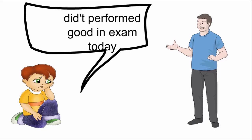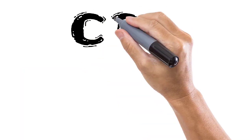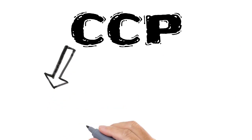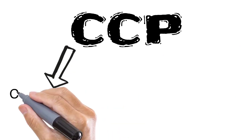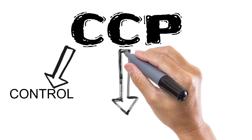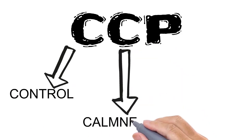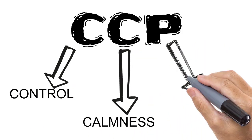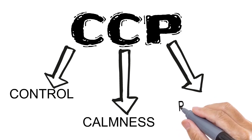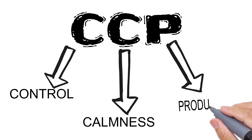The trick I was talking about is CCP. The first C means Control, the second C means Calmness, and P means Productivity. We will talk about all three one by one, and with the help of this, you can increase your performance.